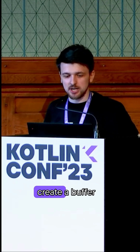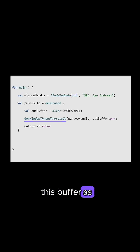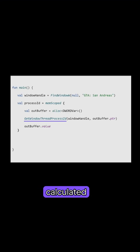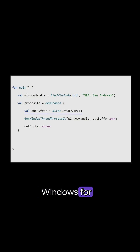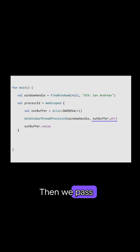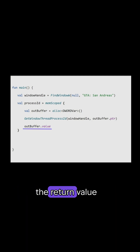But because the Windows API is written in C++, they cannot simply return the value. What you have to do is create a buffer that you pass as a parameter inside the function. And when the function has calculated the return value, it will put this value into the buffer. So we have to start out with a buffer. We can use the special alloc function that comes with Kotlin Native. DWORD is basically Windows for integer, so you can read DWORD var as int var. We allocate a buffer of an int, then we pass it as a pointer to the function. And once it completes successfully, we can extract the return value from the buffer. That will be our processID.